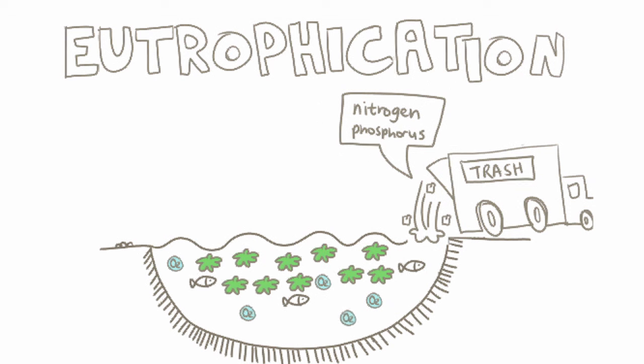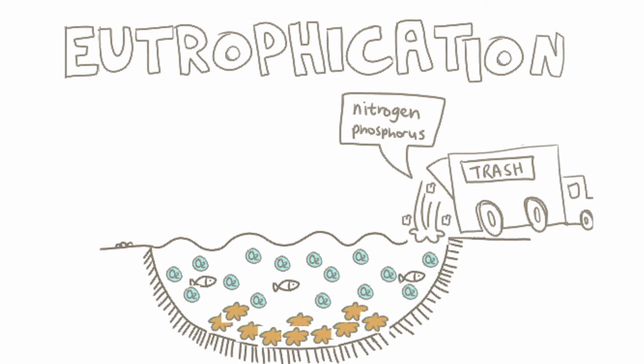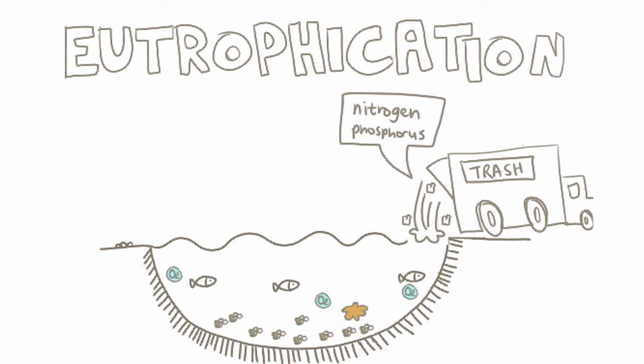Aren't plants good though? Don't they produce dissolved oxygen? Well yes, but when they die, they sink to the bottom of the lake and decay there. And this decay uses up all the oxygen in the lake. With no oxygen to breathe, the fish and other animals die, and the lake becomes unhealthy.